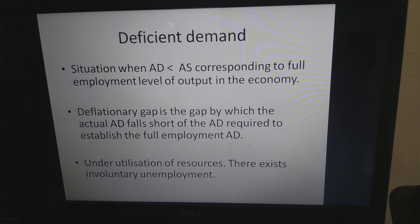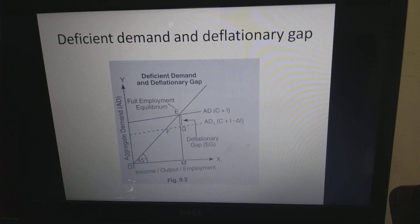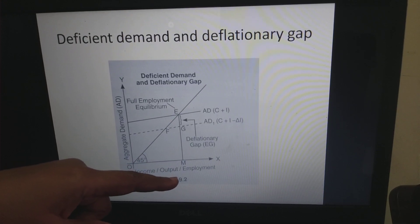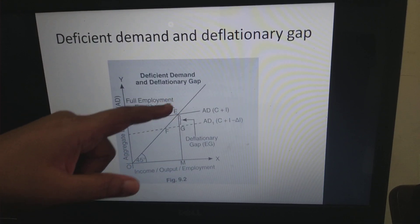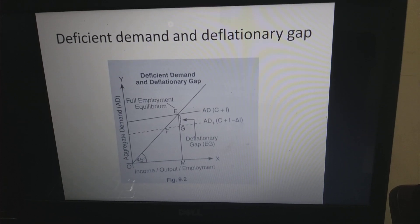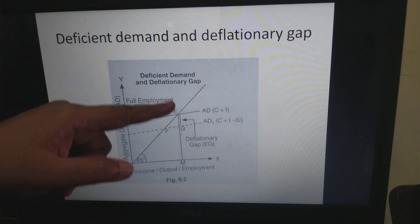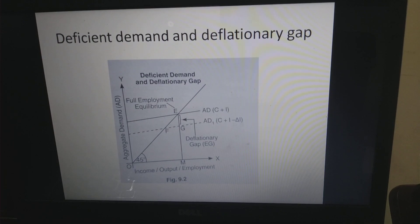What is deficient demand? Deficient demand is a situation when the aggregate demand is less than the aggregate supply corresponding to the full employment level of output. In the diagram, OM is the full employment output where AS equals AD — the full employment equilibrium. The actual AD (AD1) is deficient — below the full employment AD.